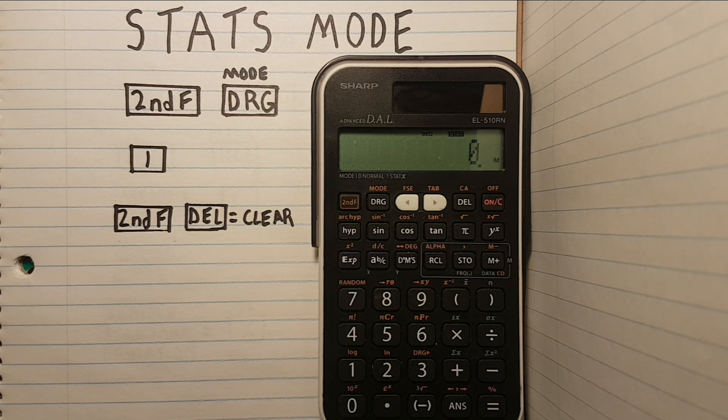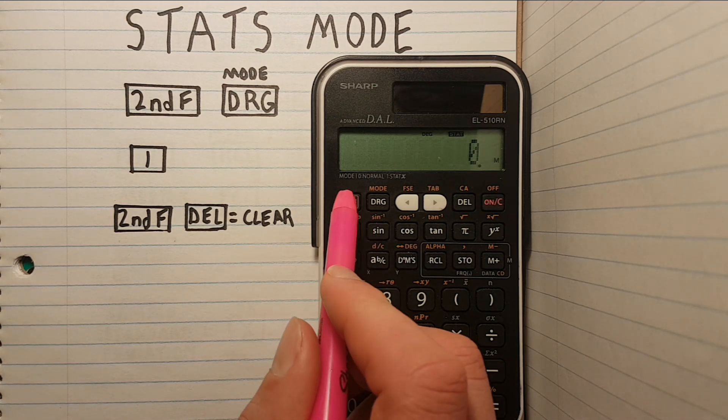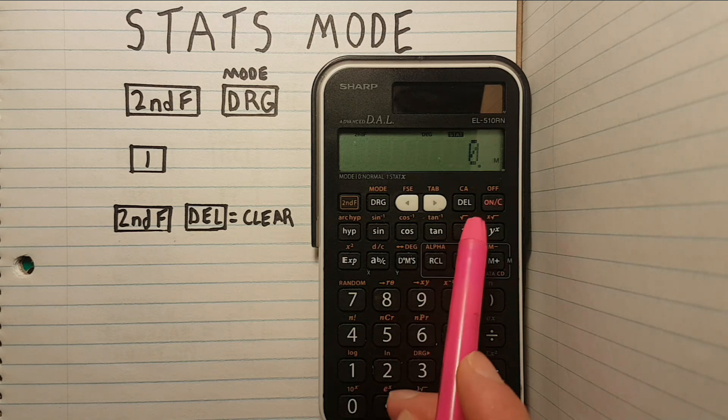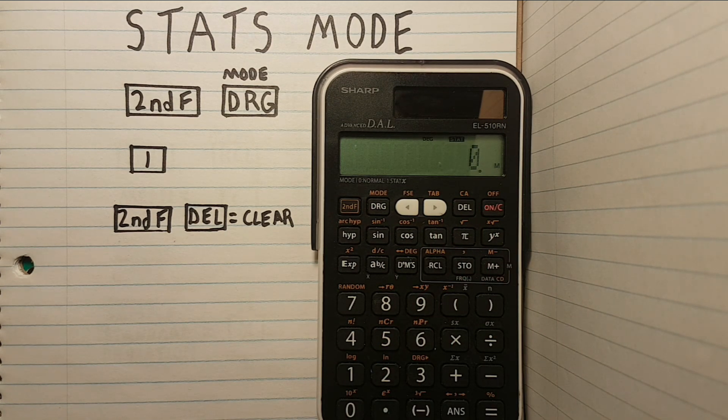Now, before we run any calculations, let's clear any previous data to ensure we're starting off fresh. To do this we press 2nd function, delete, to clear any unused data.